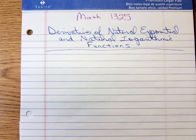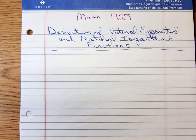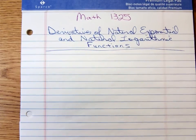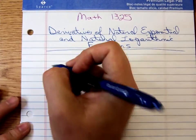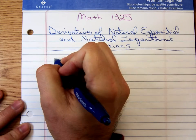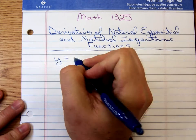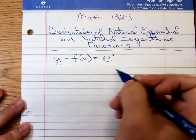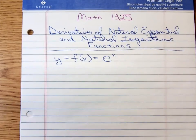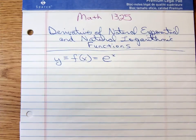Good morning. I'm Mr. Purcelli and today I wanted to talk about derivatives of natural exponential and natural logarithmic functions for my Math 1325 class. Now let's just make sure we remember what I'm talking about. The natural exponential function is y equals e to the x. Remember that e, the irrational number, is approximately 2.718.